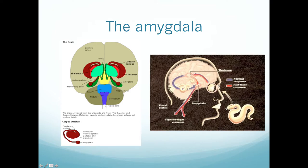Sensory information first stops at the thalamus, then is relayed to where it needs to go — thalamic relay. In normal responses, sensory input like seeing a snake goes directly to the amygdala, which puts forth a sympathetic response. In an anxiety disorder, that sympathetic response occurs when there is no direct threat to the safety of the person's body or ego.